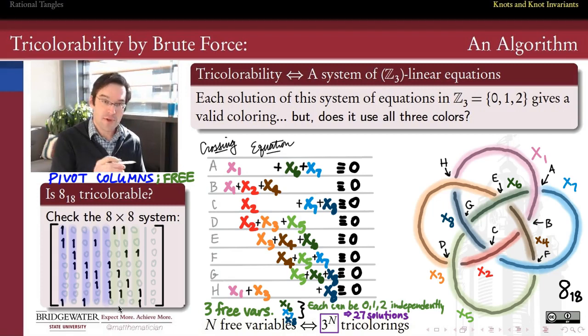The issue, though, so that's 3 to the n, right? Every free variable that I have gives me an independent choice of three different colors. And since they're independent, we just multiply all of those together. And so 3 to the n tricolorations if I have n free variables.